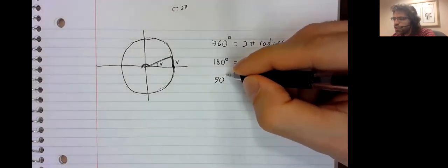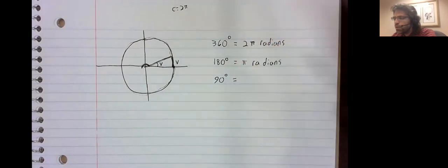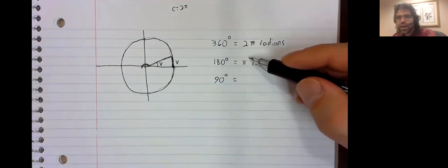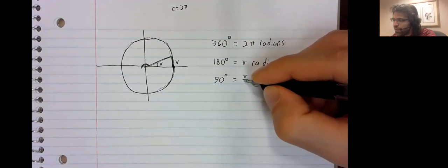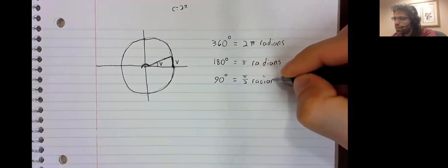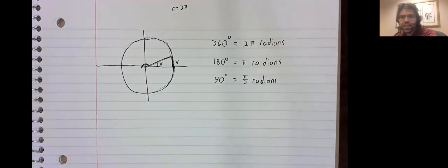90 degrees, a right angle. Well, 90 is half of 180. So half of pi radians is pi over 2 radians. And there are a few other standard angles that you should know.